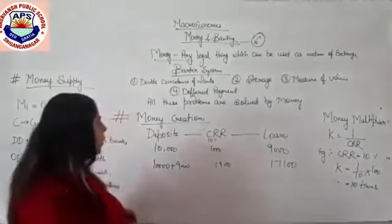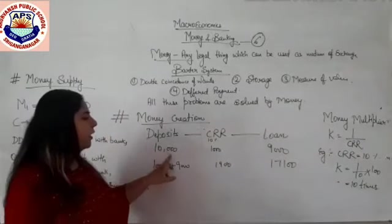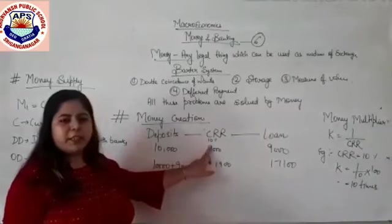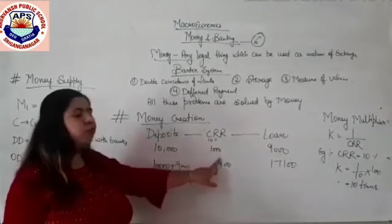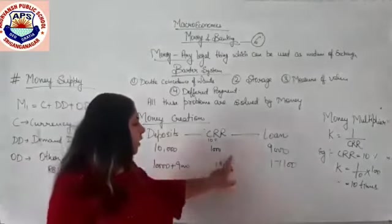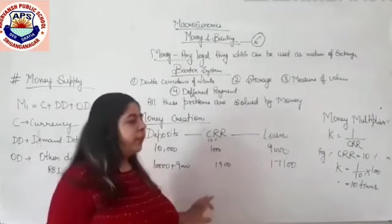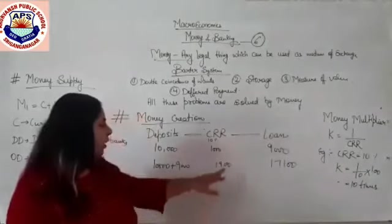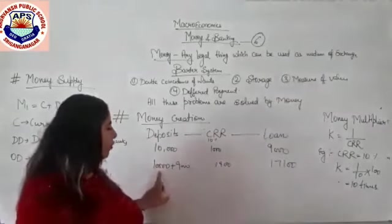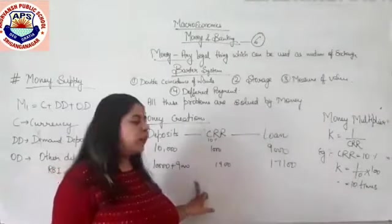Let's see what the process is. Suppose on the first day a deposit of 10,000 rupees comes in. CRR is 10%, so 10% of 10,000 is 1,000. The bank reserves 1,000 and gives the remaining 9,000 as a loan. The next day, 9,000 is loaned out, adding to the original 10,000 — making 19,000 in total. So how much will they now reserve?